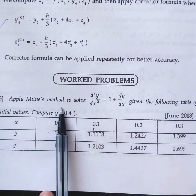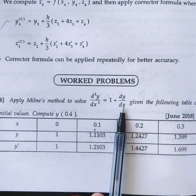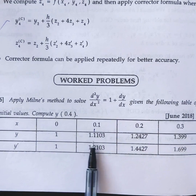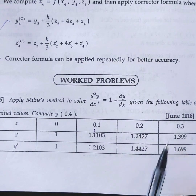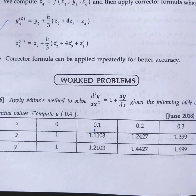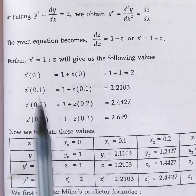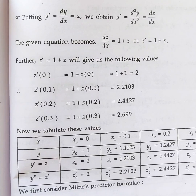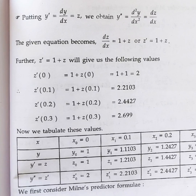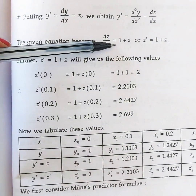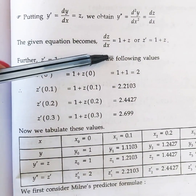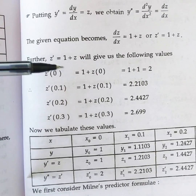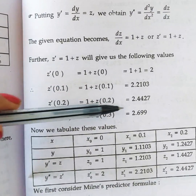Now try to solve this practice problem: apply Milne's method to solve d²y/dx² = 1 + dy/dx with given values x = 0, 0.1, 0.2, 0.3; y = 1, 1.1103; y dash = 1, 1.2103, 1.4427, 1.699. The procedure is the same — substitute dy/dx as z, so d²y/dx² = dz/dx, giving z' = 1 + z. The z dash values are: 1 + z(0) = 1 + 1 = 2; 1 + z(0.1) = 1 + 1.2103; 1 + z(0.2) = 1 + 1.4427; 1 + z(0.3) = 1 + 1.699.